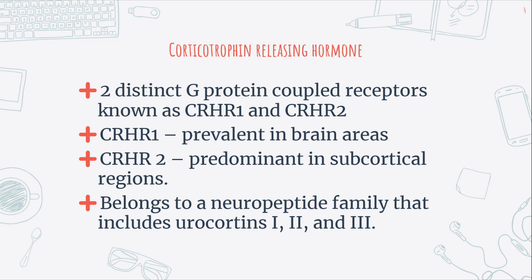In contrast, corticotropin-releasing hormone receptor 2 is predominant in subcortical regions, including the lateral septum, bed nucleus of the stria terminalis, ventromedial hypothalamic nucleus, and medial and cortical nuclei of the amygdala. In the anterior pituitary, corticotropin-releasing hormone receptor 1 mediates the release of adrenocorticotropic hormone in response to corticotropin-releasing hormone.